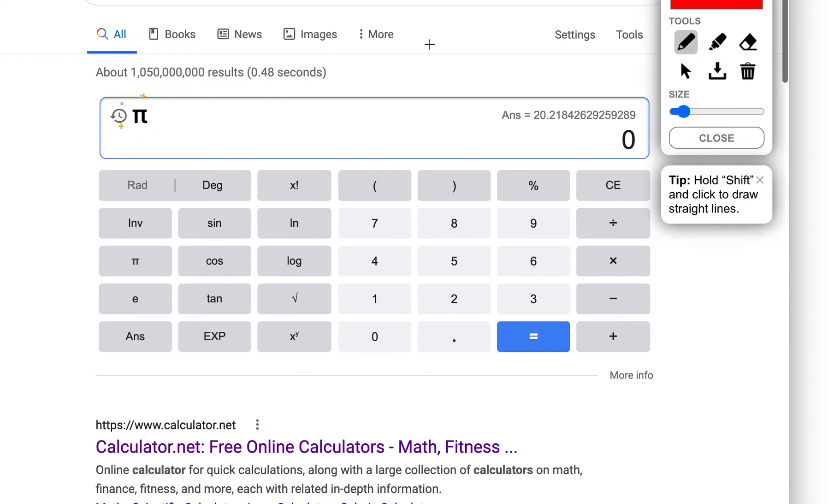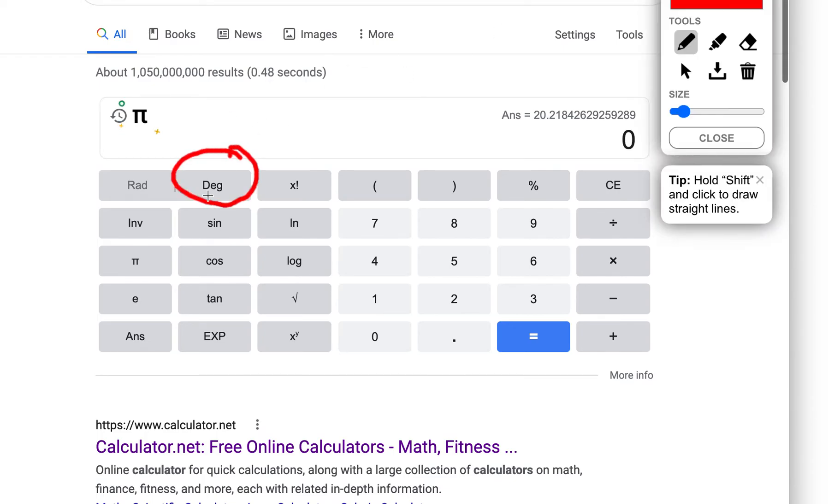So here we're going to need to make sure two things. Number one, our degrees is pushed, which this one is now showing degrees. And our inverse button on our iPhone is our second button. That's going to end up giving us sine to the negative 1 when we push that.